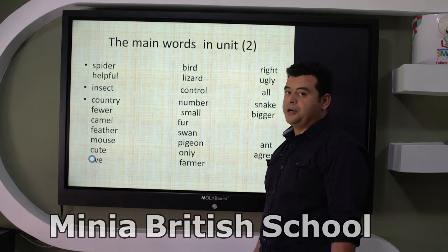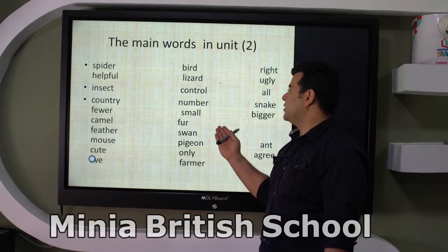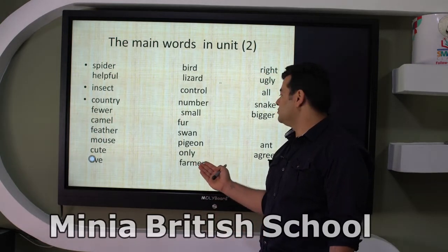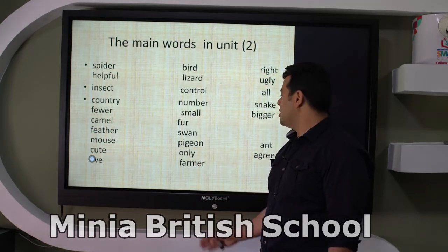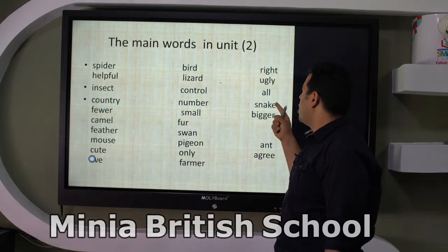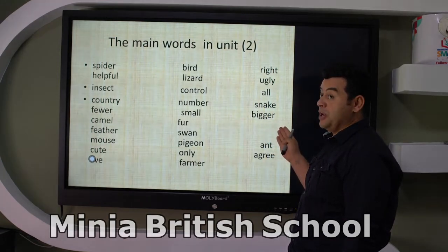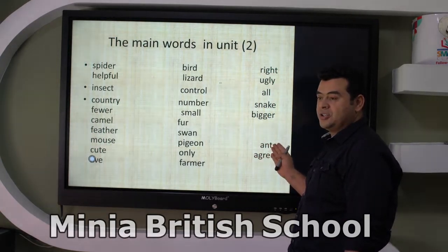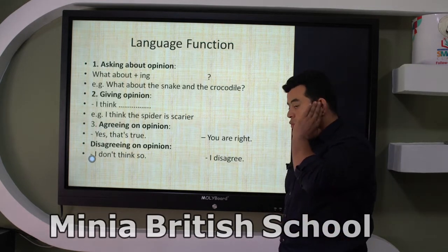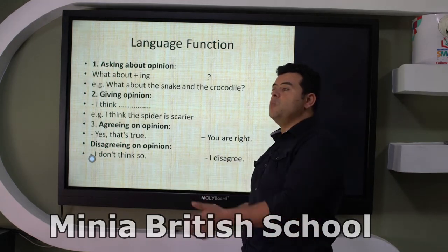More words: control, number, small, fur, swan, pigeon, only, farmer, right, white, ugly, snake, bigger, aren't, sorry, ant, agree. Now we have something like — if you'd like to ask about someone's opinion, you would say 'What about...?'